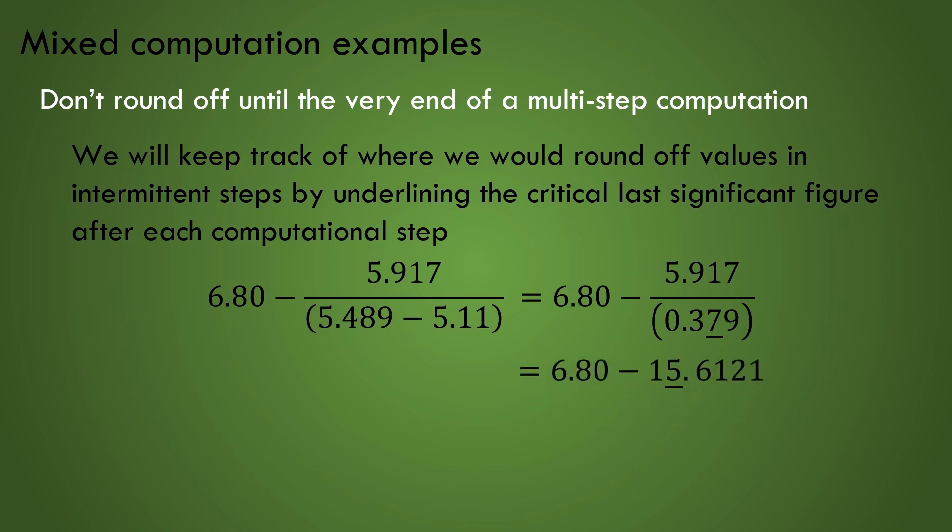Now we do the division and obtain 15.6121, underlining the 5 value in the 1's position because we are essentially dividing by a number, the .379 value, from the previous step, which has two significant digits.